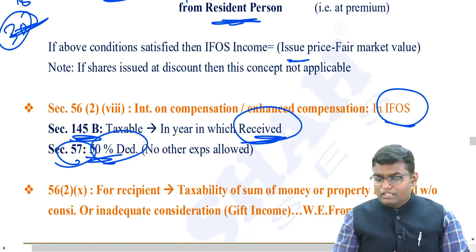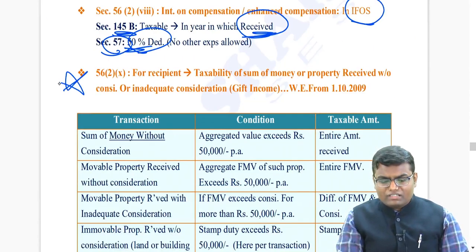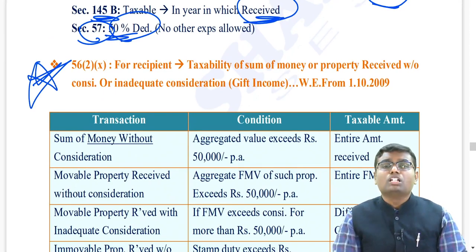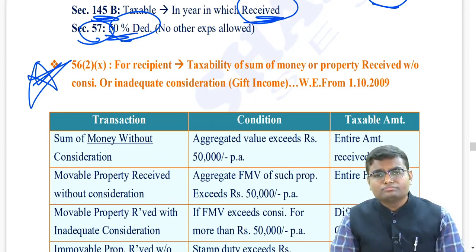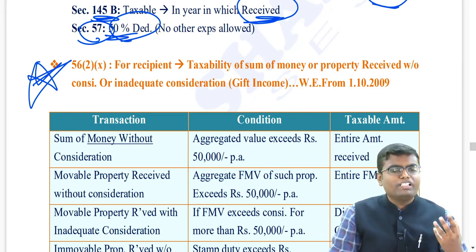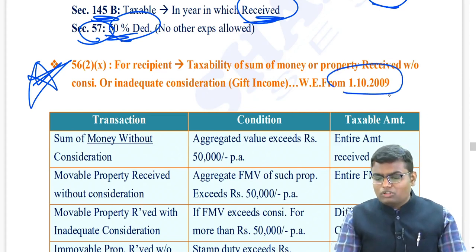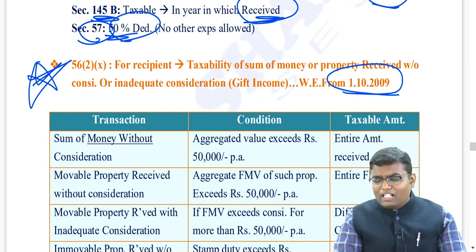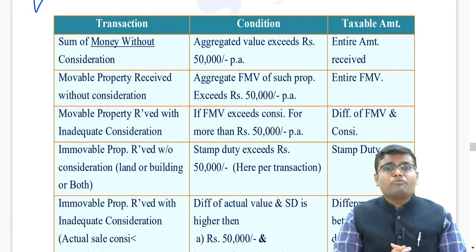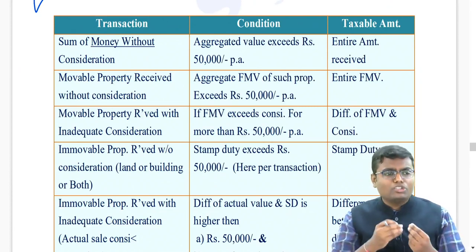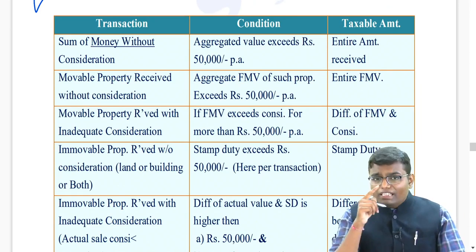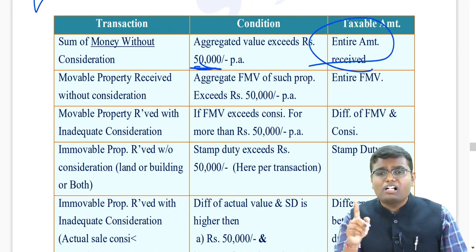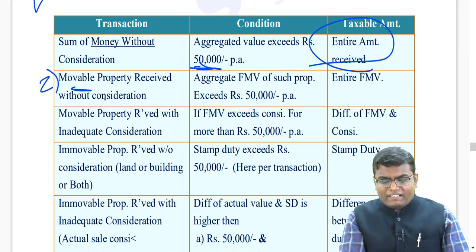Section 56 subsection 2 clause (10) - one of the very important sections of the IFOS chapter - gift income. Whenever you receive a gift, it will be taxable provided it exceeds ₹50,000 in a year, either in cash or as property - movable or immovable. This section is applicable from 1st October 2009. There are total five transactions in gift income. Number one: sum of money without consideration - you receive money either through cash or bank account without any consideration. If in a year the total gift amount exceeds ₹50,000, the entire gift income will be taxable.